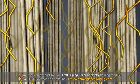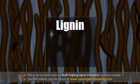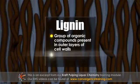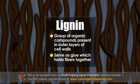Cellulose and hemicellulose function as supporting materials in the cell walls in wood fibers. Lignin refers to a group of organic compounds which are present in the outer layers of the cell walls and serve as the glue which holds the fibers together.